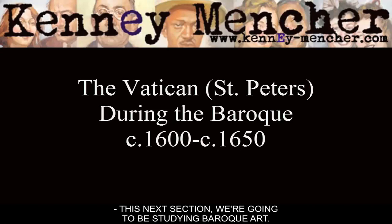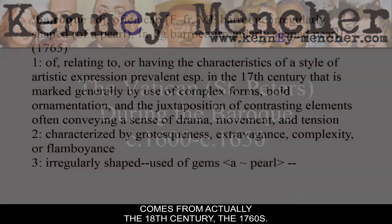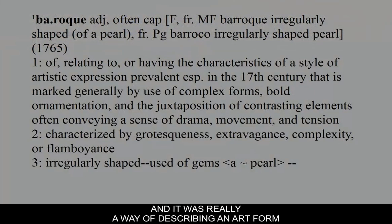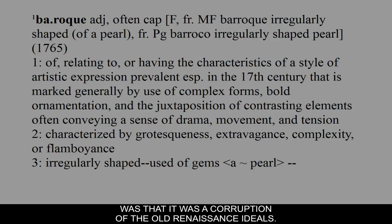In this next section, we're going to be studying Baroque art. Probably the most important thing about it is that the definition of the Baroque comes from the 18th century, the 1760s, and it was really a way of describing an art form that in the 1700s they found kind of corrupt — a corruption of the old Renaissance ideals. By this definition, it literally means an irregularly shaped pearl.